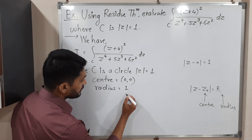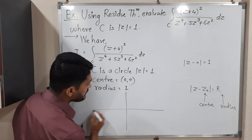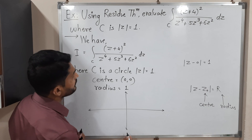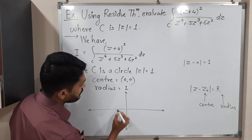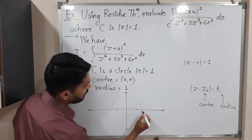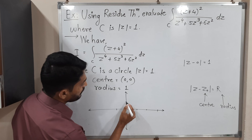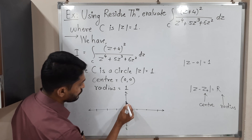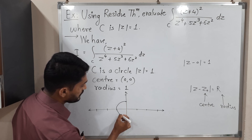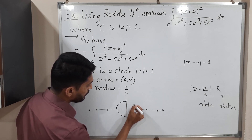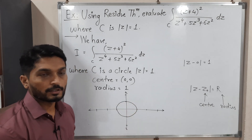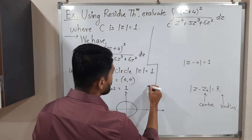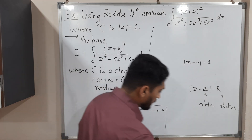The given circle has center (0, 0) and radius 1. Let us draw this — the imaginary axis and real axis. We draw the circle with center (0, 0) and radius 1, marking scale points at 1, 2, 3 and −1, −2, −3. Now let us use the remaining space to solve the rest of the problem.